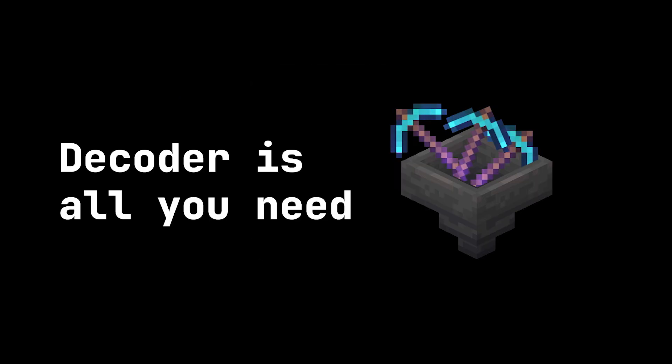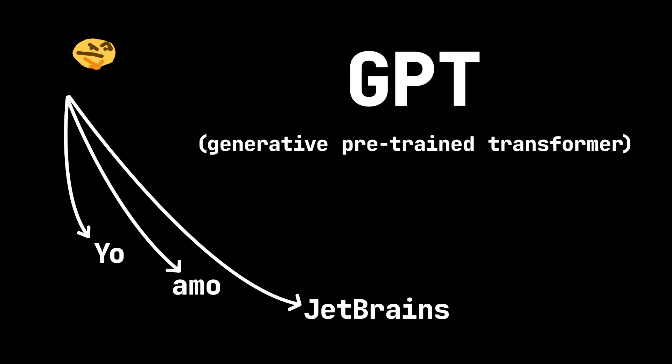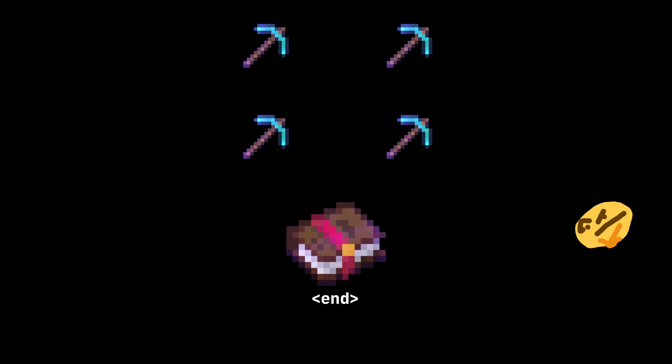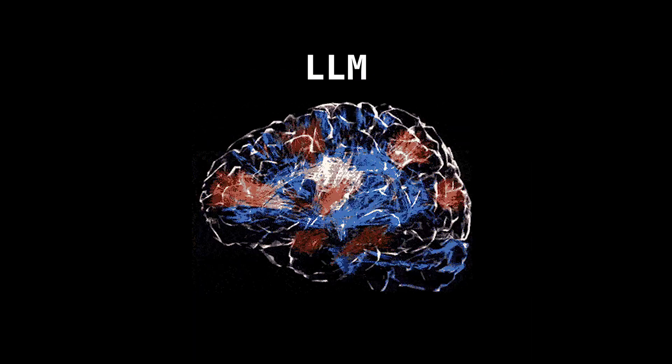Then OpenAI decided: what if we only need the decoder? What if we just want to generate text — like continuing 'I love' with 'JetBrains'? For text generation, you only need the decoder. So they built GPT — Generative Pre-Trained Transformer. You give it 'I love', it does masked self-attention through 96 layers in GPT-3, looks at the last word's hidden state, and predicts 'JetBrains'. Then it adds that to the sequence and keeps going until it hits a stop token or reaches its context window limit. No encoder, no cross-attention — just masked self-attention. OpenAI then figured out that scaling and training GPT on massive amounts of text learned basically everything: grammar, facts, reasoning, coding — all from predicting the next word. Add more layers and training, and you get ChatGPT.